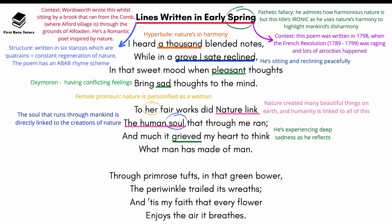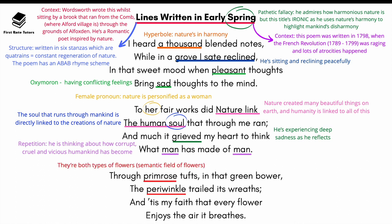When he says 'much it grieved my heart,' we can see he's experiencing deep sadness as he reflects. The repetition of the word 'man' in the fourth line of the second stanza reveals how Wordsworth is reflecting on how corrupt, cruel, and vicious humankind has become.